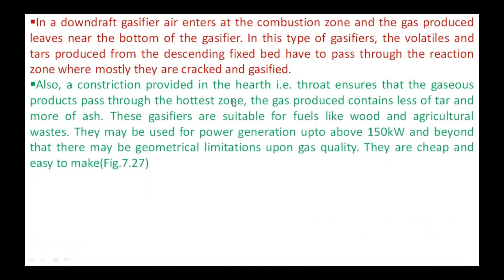A constriction is provided in the hearth where combustion takes place; this constriction is called the throat, and it ensures that gaseous products pass through the hottest zone. The producer gas contains less tar and more ash, because the tar is cracked — some of it forms ash and the remaining forms gas. That is why the producer gas has an ash content.